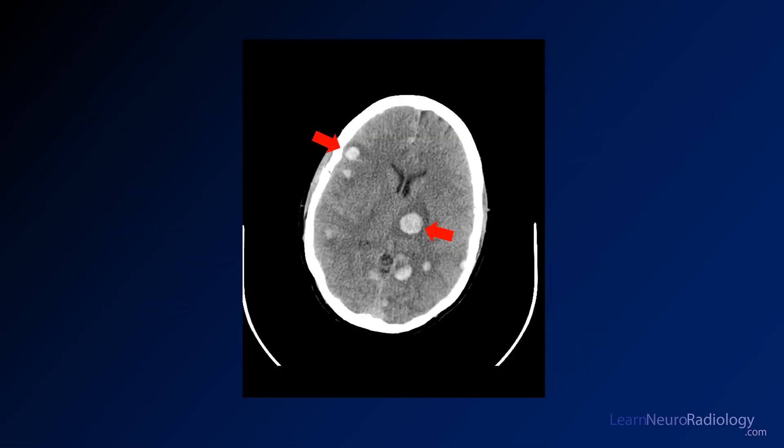On the CT, you'll see these hyperdense masses — the findings are somewhat obvious. The reason they're dense in this case is because they have internal blood products.